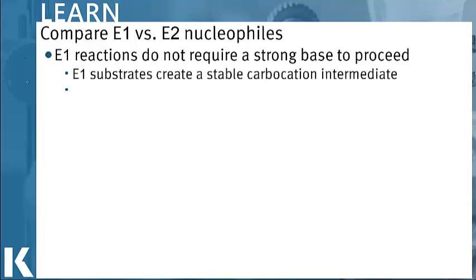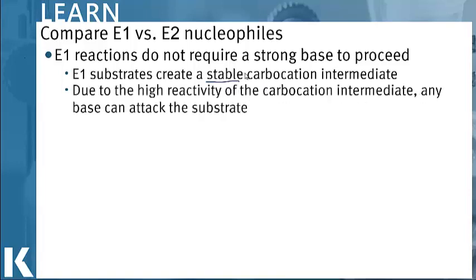The reason for this is because the E1 substrates create very stable carbocation intermediates. These carbocation intermediates are stable, but they are also very reactive. Because of this high reactivity, any base that they come across can attack and deprotonate that substrate. This is why we do not need to have a strong base to proceed.